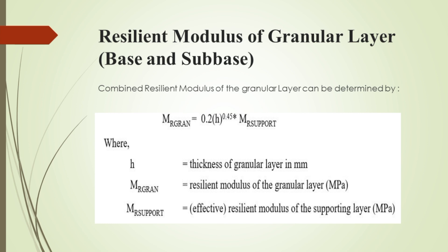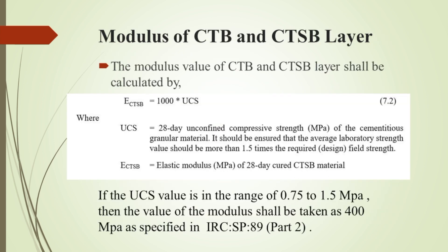But if CTB, that is cement treated base, is used, both base and subbase must be considered separately. The modulus of granular subbase can be found using the same equation provided on screen. The modulus of CTB and CTSB, i.e. cement treated subbase, shall be calculated by the equation with respect to the unconfined compressive strength of the cementitious granular material. In general, the values of elastic modulus for CTSB and CTB are taken as 600 MPa and 5000 MPa respectively.